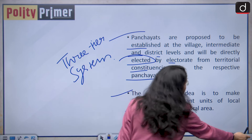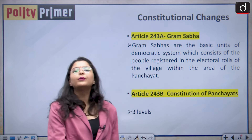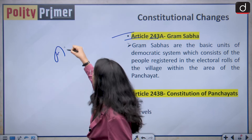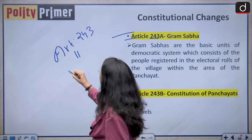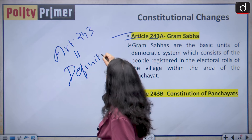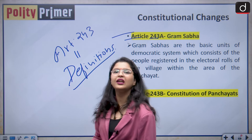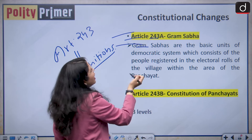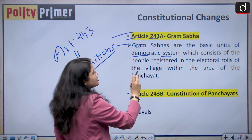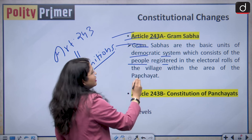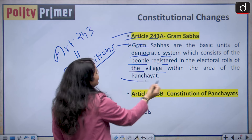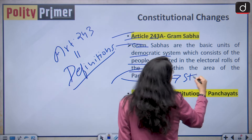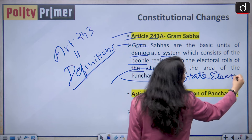Let us analyze the constitutional changes brought by the 73rd constitutional amendment act. Article 243 deals with the definition section. Article 243-A states about the body known as a Gram Sabha. Gram Sabhas are the basic units of the democratic system, consisting of people registered in the electoral rolls of the village within the area of the Panchayats. The elections are conducted by the state election commission.